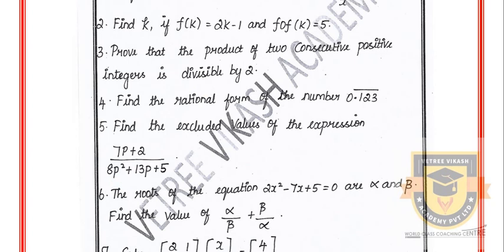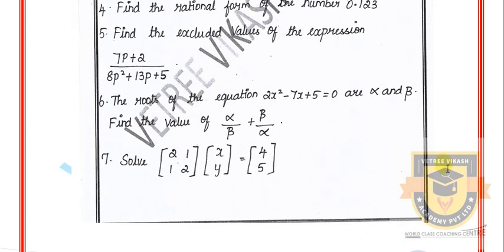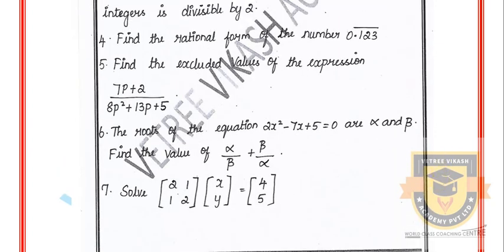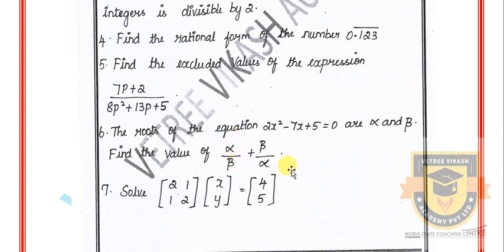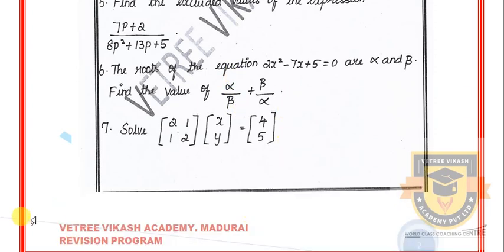The next important question: Find the rational form of the number 0.123 repeating. Find the excluded values of the expression 7p plus 2 divided by 8p squared plus 13p plus 5. The roots of the equation 2a squared minus 7x plus 5 equals 0 are alpha and beta — find the value of alpha over beta plus beta over alpha.